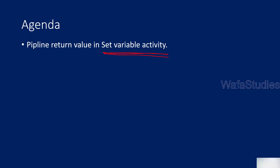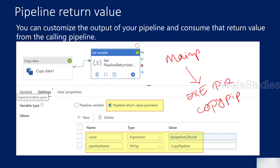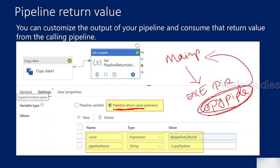Inside the Set Variable activity there is a new feature called pipeline return value that was introduced. This feature is very helpful when you want to return some value from your child pipeline back to the main pipeline. For example, assume you have a main pipeline that runs another pipeline using the Execute Pipeline activity — say a copy pipeline as the child pipeline. Once that child pipeline execution completes, you may want to return some value back to the main pipeline.